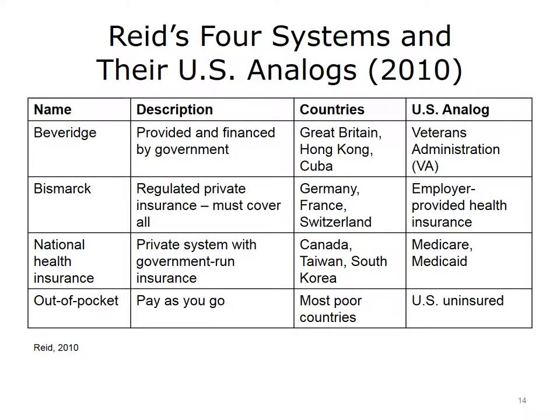The third model is the National Health Insurance Model — a private health care system with government-financed insurance. Canada is probably the best-known example, although Taiwan and South Korea also use it. The closest analog in the U.S. is Medicare and Medicaid. The final model is out-of-pocket health care, where individuals pay as they go. Most poor countries that cannot afford a comprehensive health care system use this approach, and many uninsured citizens in the U.S. function under this model.